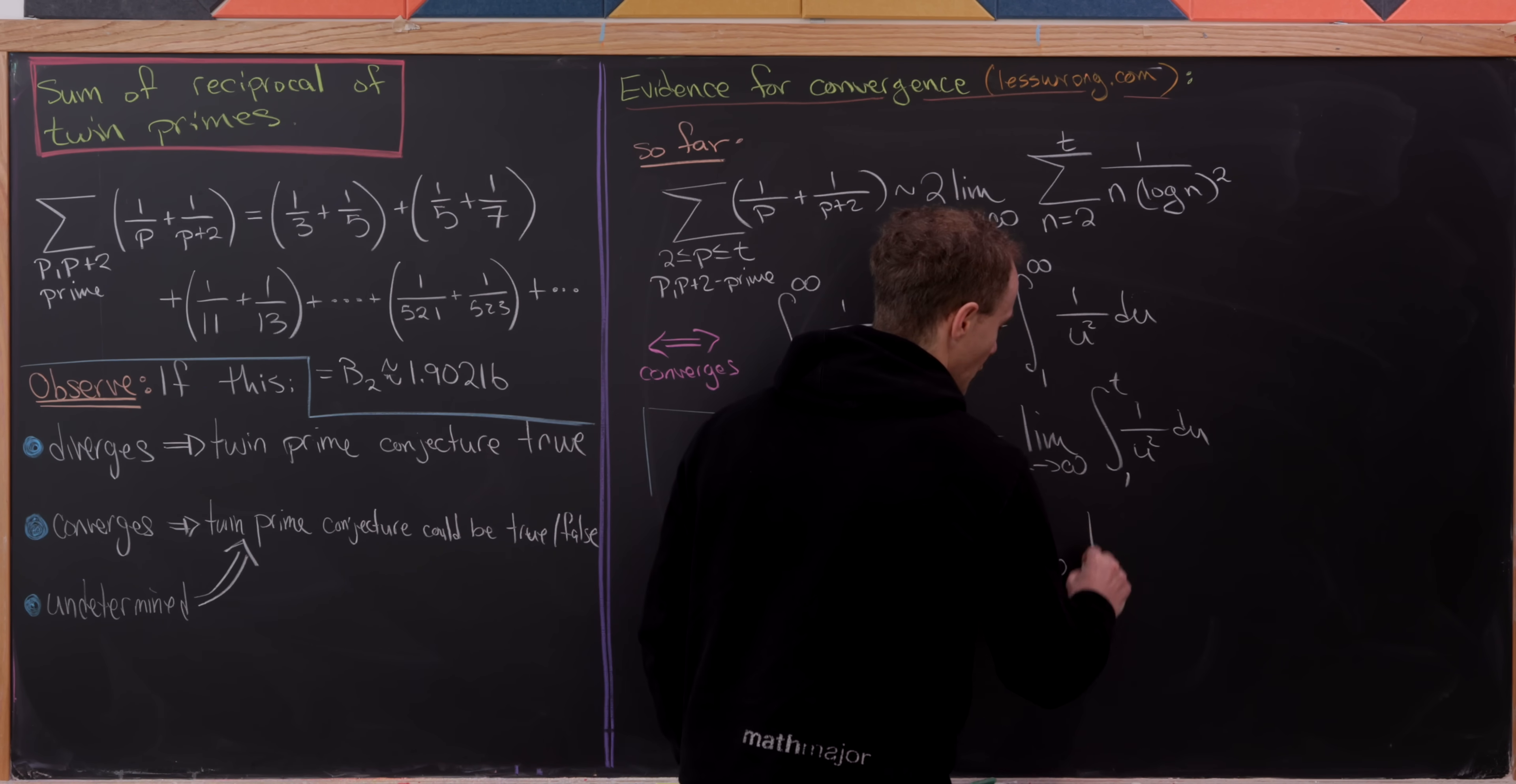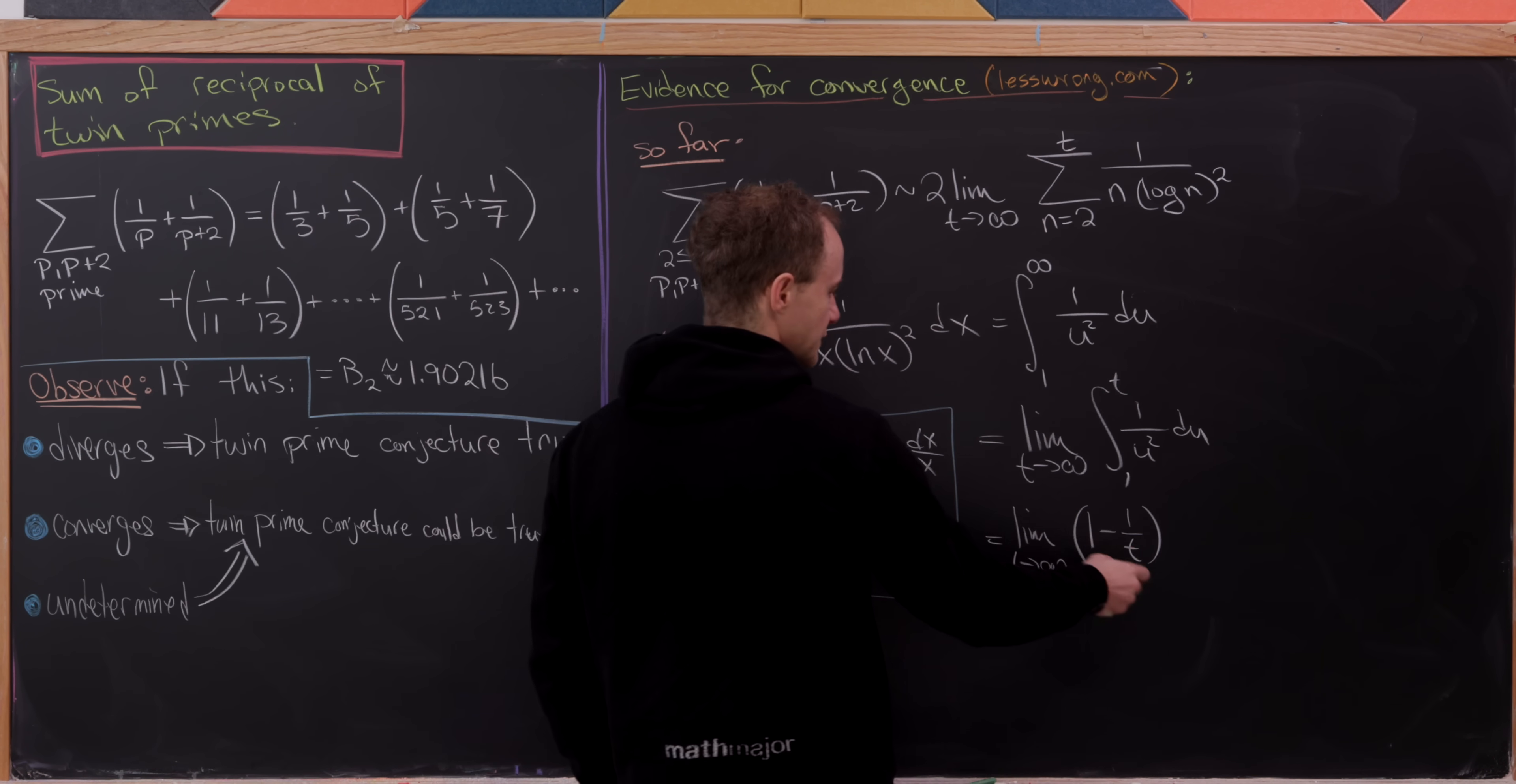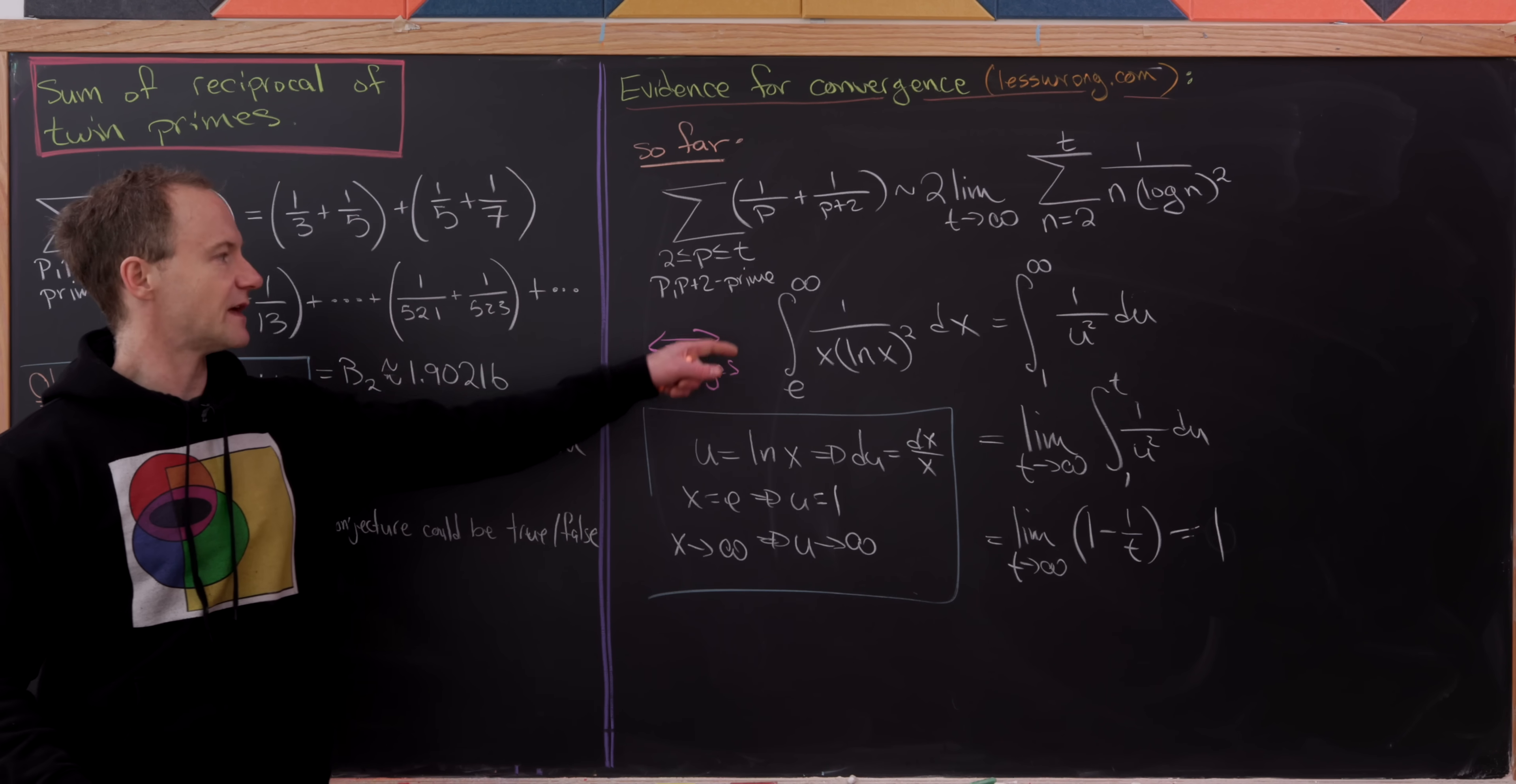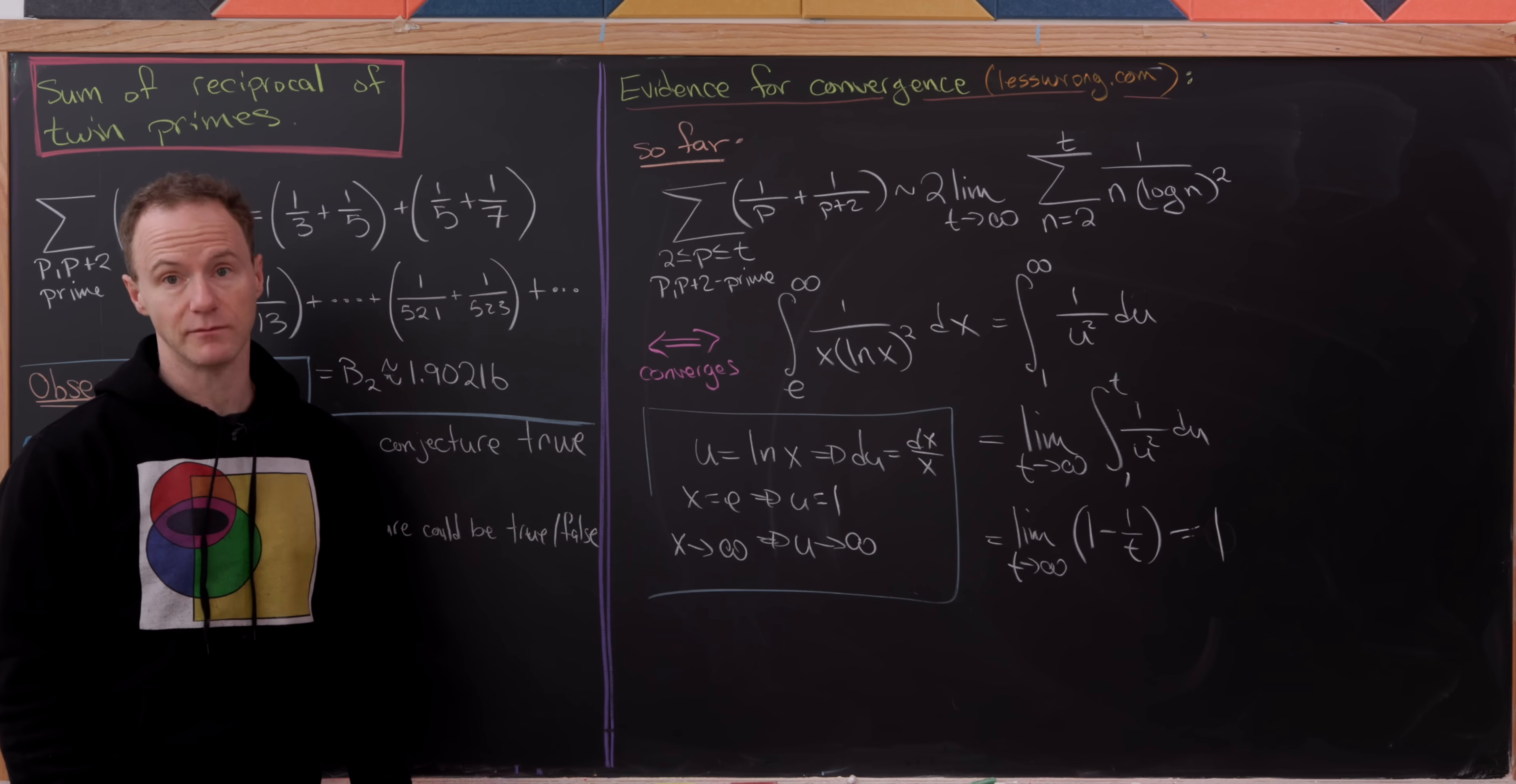So let's rewrite this as the limit as t goes to infinity of the integral from 1 to t of 1 over u squared du. We can take an anti-derivative and that'll leave us with the limit as t goes to infinity of, let's see, it'll end up being 1 minus 1 over t. And so I skipped a little bit of a step there, but I think that's okay. But observe that as t goes to infinity, 1 over t goes to 0. So this whole thing goes to the number 1. So that means our integral converges. And by this loose argument, that means our original sum converges.